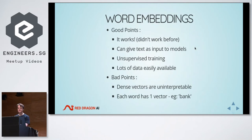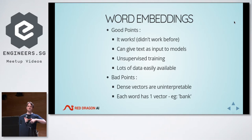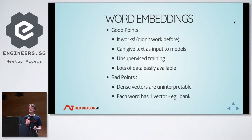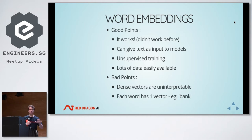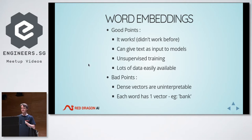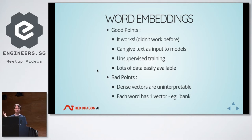The good points about word embeddings: it works, and things didn't really work before. It allows us to give text as input to models. For images, it's obvious — pixel values. For text it was not so obvious, which is why people searched through RNNs and other permutations. We can train this in an unsupervised way without giving it any information about English. And we've got tons of data — you can download Wikipedia by finding the right link, and in Singapore in less than a minute you'll have six gigabytes of data.